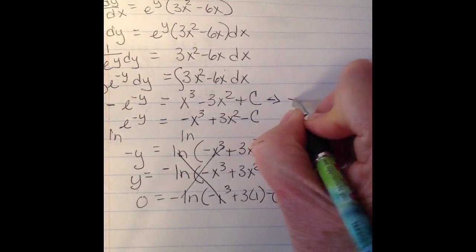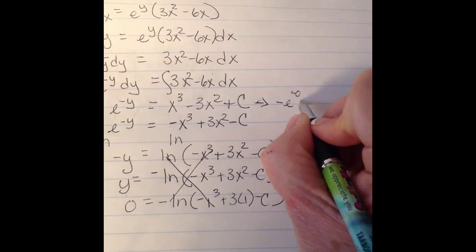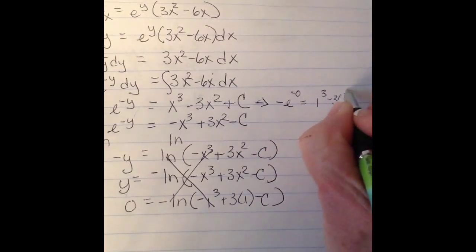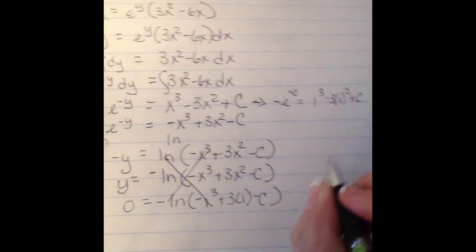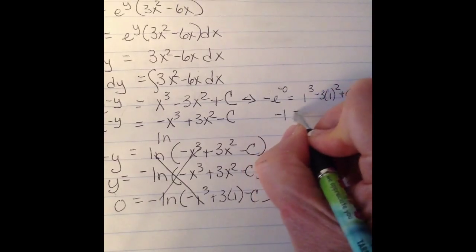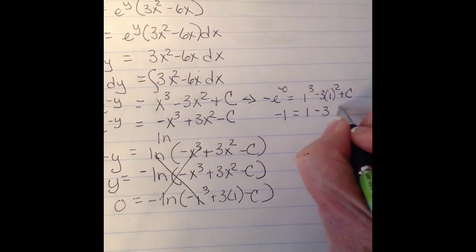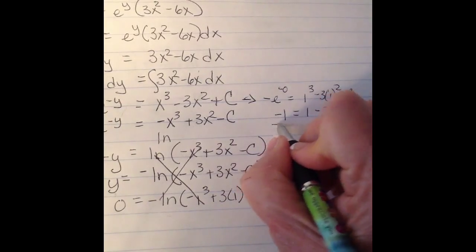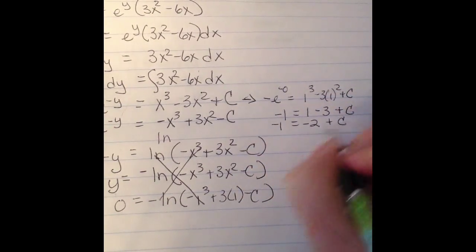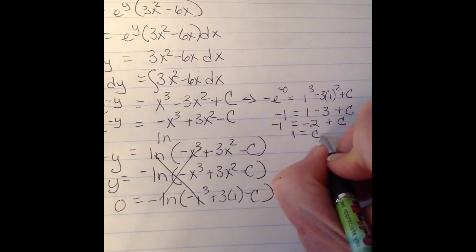So let's go back up here and try here. So if I go -e^(-0) = 1³ - 3(1²) + c, and e^0 is going to be -1 = 1 - 3 + c. And I'm going to get... And when I add the 2 over, I get 1 = c.